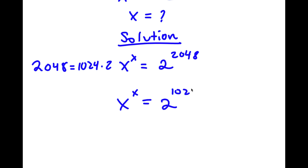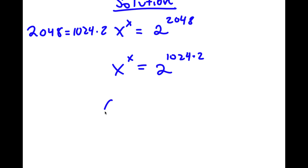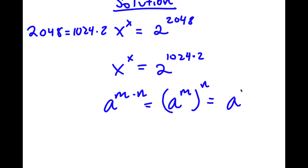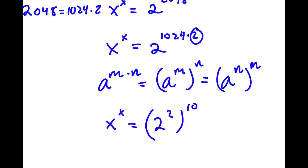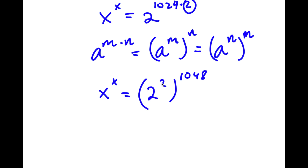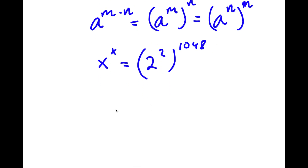So now I have 2 to the power of 1024 times 2. If I have something in the form a to the power of m times n, this is the same thing as a to the power of m to the power of n. So 2 to the power of 1024 times 2 I'm going to rewrite as 2 to the power of 2 to the power of 1024. Now 2 to the power of 2 is simply equal to 4, so now I have x to the power of x is equal to 4 to the power of 1024.